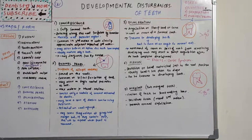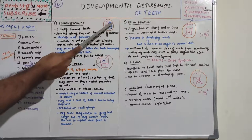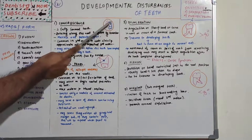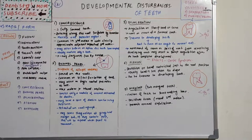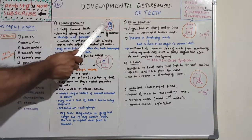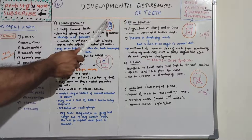Concrescence is when two fully formed teeth join at the root by cementum. When two different teeth join at the root side by cementum, it is known as concrescence. It is only on the cemental side — it does not extend into the coronal part; only the roots are joined.